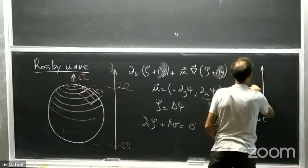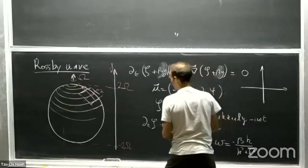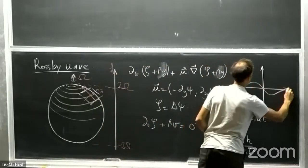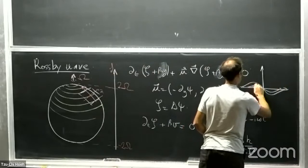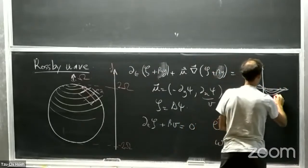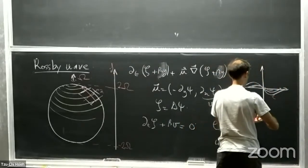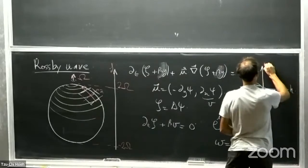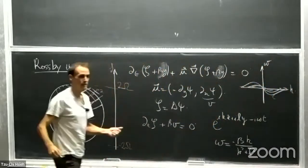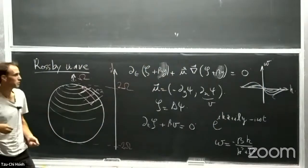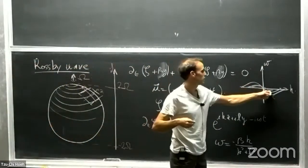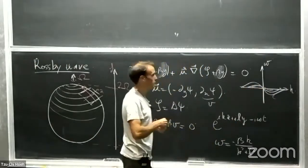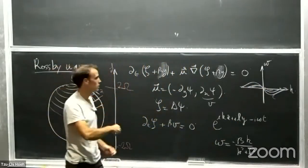Let's draw the dispersion relation for different values of L, with K on the horizontal axis. Beta breaks time-reversal symmetry in this model — one manifestation is these waves, because if you map ω to −ω, it's broken.